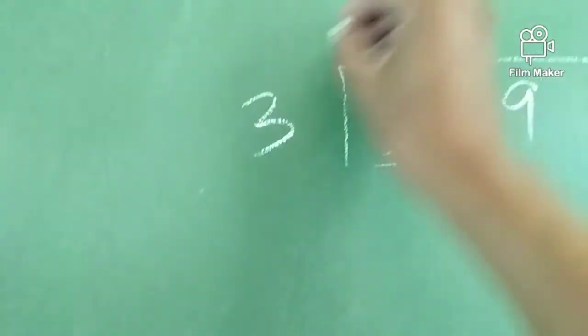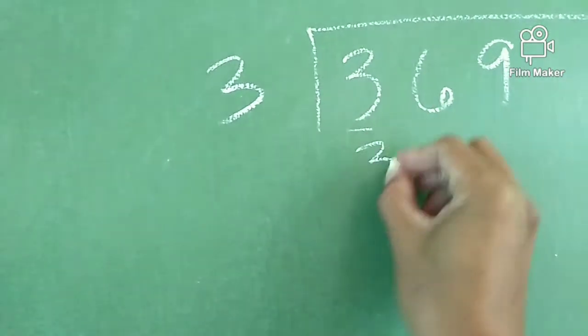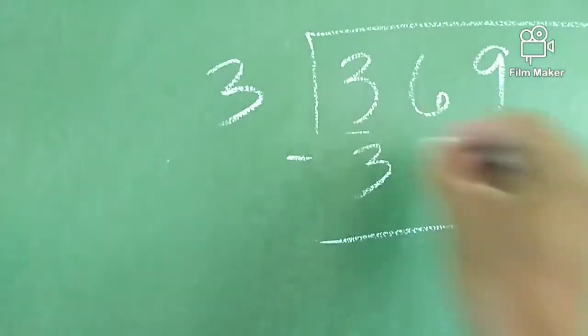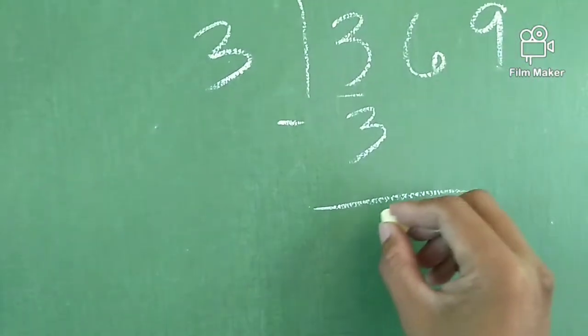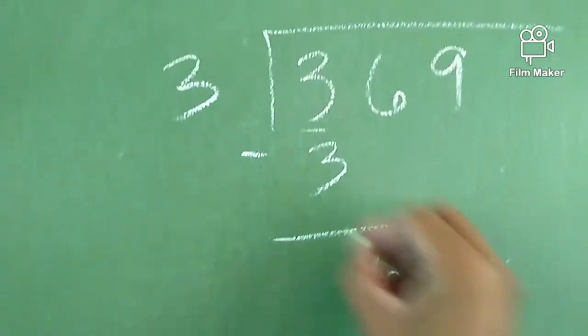1 times 3, we have 3. Then subtract. This is cancelled out, so 0 na siya. Bring down 6.